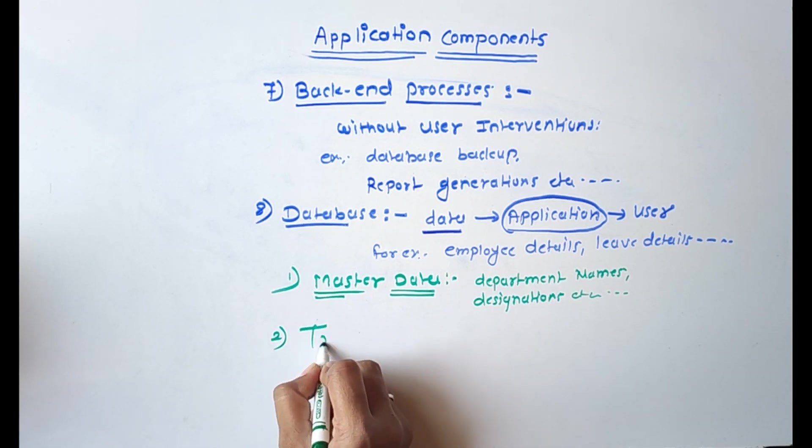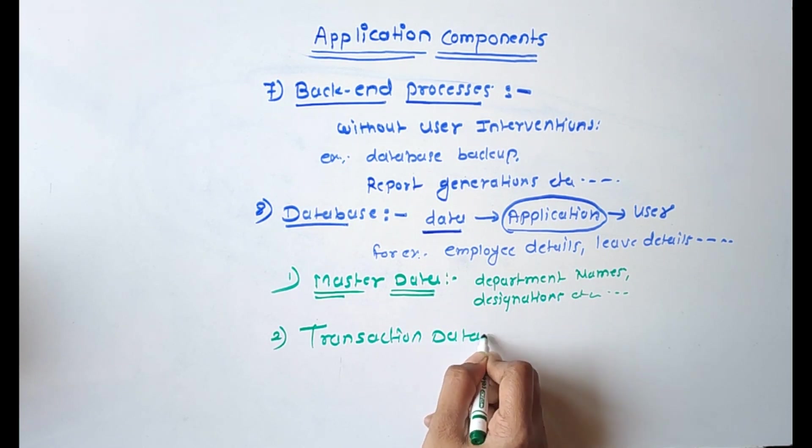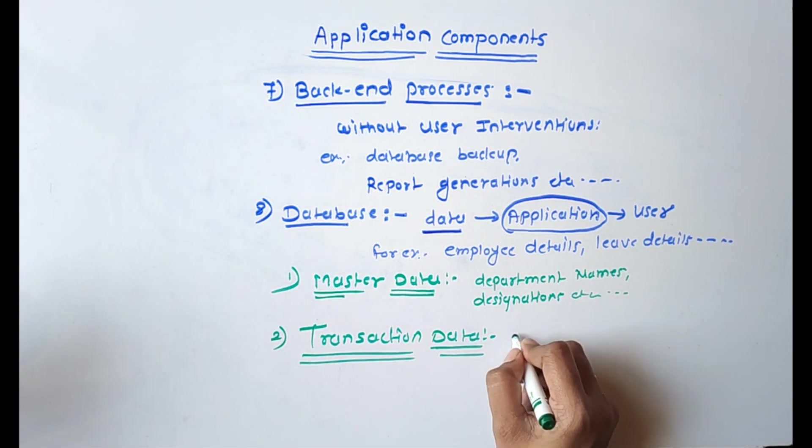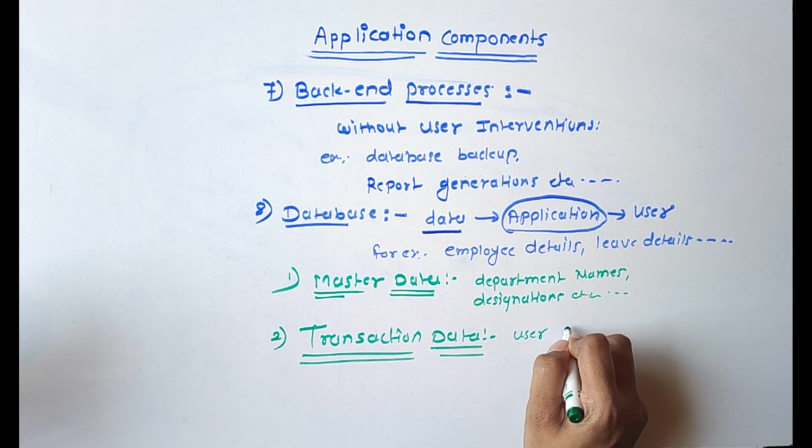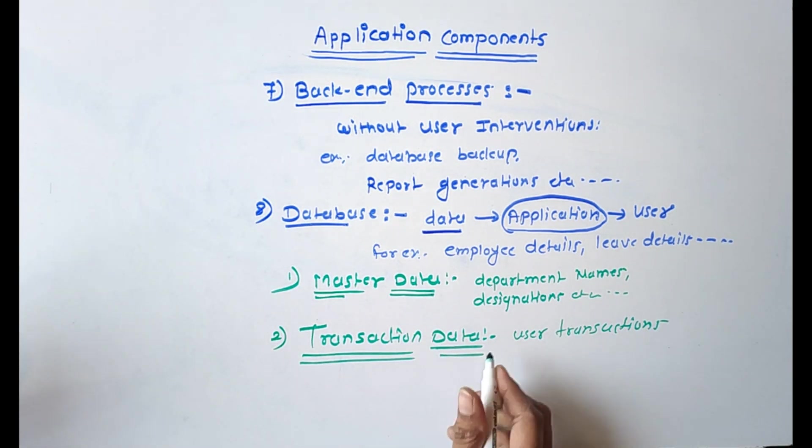Second one is transaction data. Transaction data means it changes based on user transactions. For example, number of leaves taken. Each and every time data is immediately changed, like modified, inserted, and deleted.